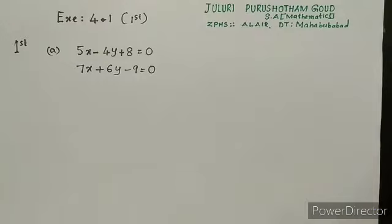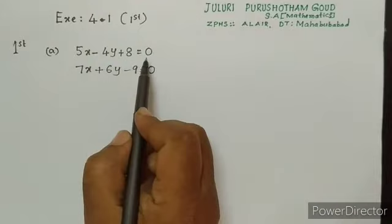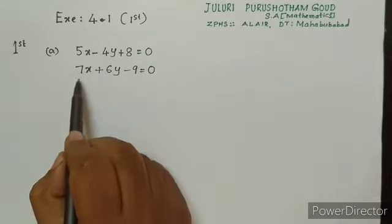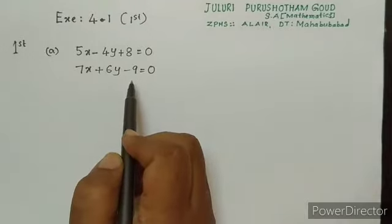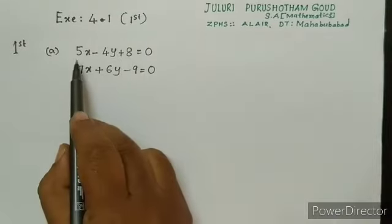Okay, see this first question children. Here, 5x minus 4y plus 8 is equal to 0 is the first linear equation and the second linear equation is 7x plus 6y minus 9 is equal to 0. Okay, we have to check the condition children.